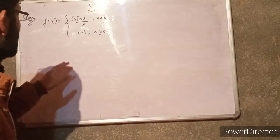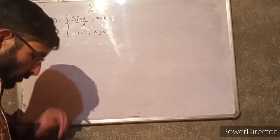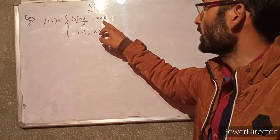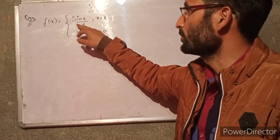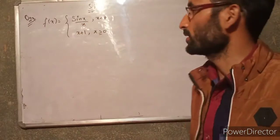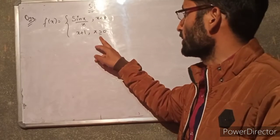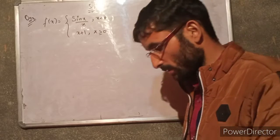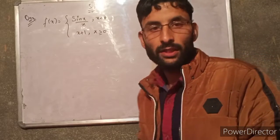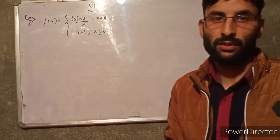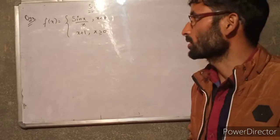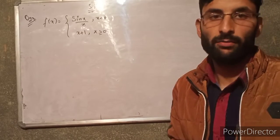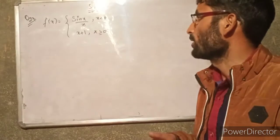This is our last question. When x is less than 0, the function is equal to sin x divided by x. When x is greater than or equal to 0, x plus 1 is equal to 1. We need to check which choice is continuous. For continuity, the left-hand limit must equal the right-hand limit, and that must equal the function value.